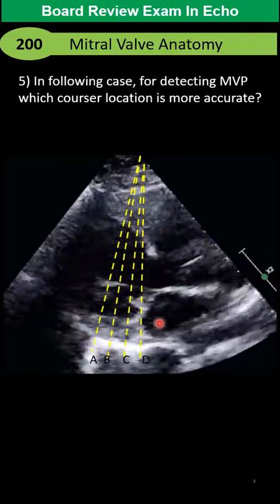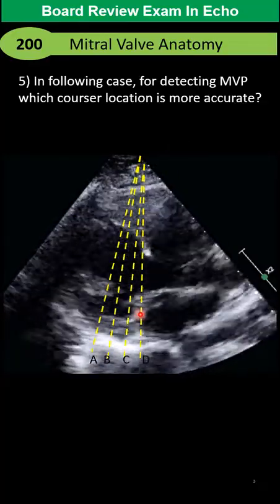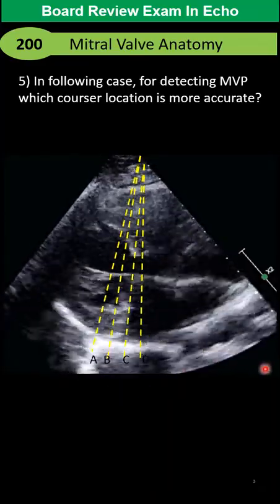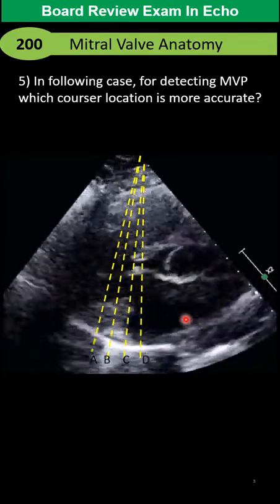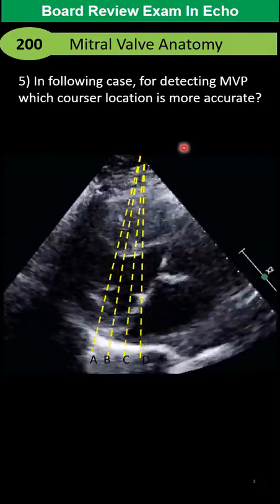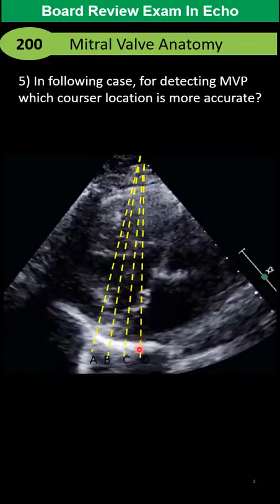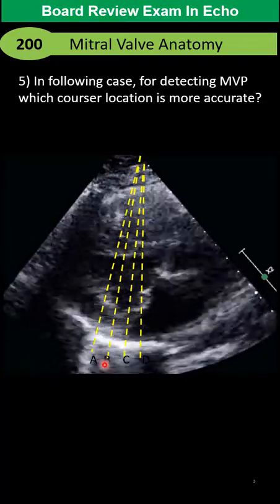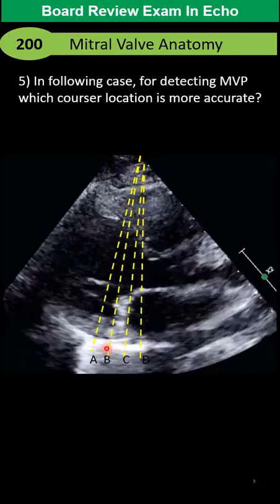Here we have, as you can see, mitral valve prolapse — it is bicuspid, involving both the anterior mitral valve and posterior leaflets. Now you want to report, record, and show it in M-mode. For that purpose, based on this view, we can put the cursor at close — a little beyond the mitral valve leaflet. Can that cursor position catch and prove that there is mitral valve prolapse or not — is it the B line, C line, or D line? Which one is the best for detecting that abnormality?